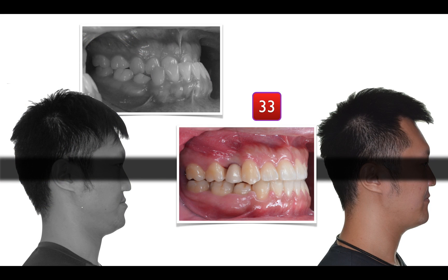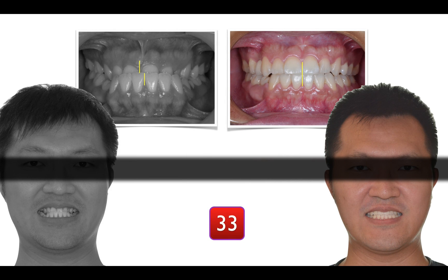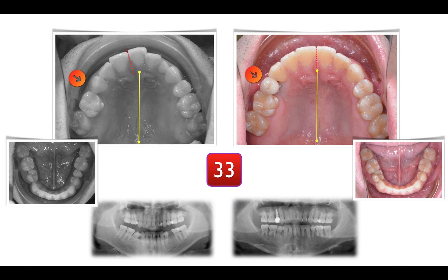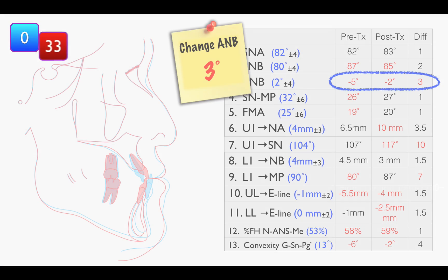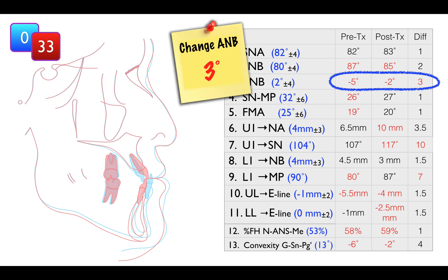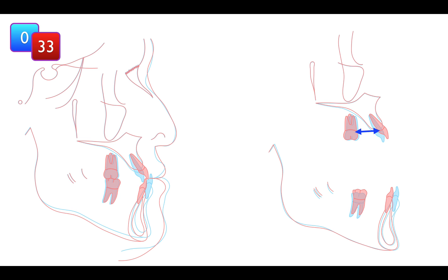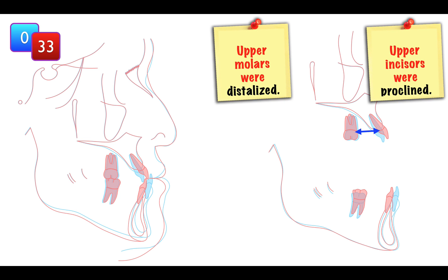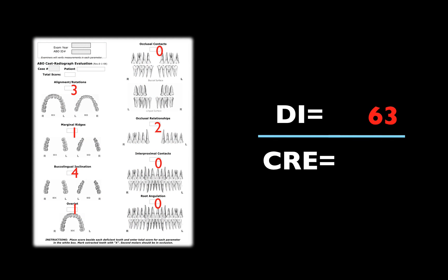Within 33 months of treatment, this difficult malocclusion was corrected. His anterior Class 3 and dental facial asymmetry were solved. Compared before and after, there is a huge difference. Looking at the cephalometric superimposition, the lip-B angle was increased by 3 degrees. With an open coil spring, upper incisors were proclined and the upper molars were distalized.